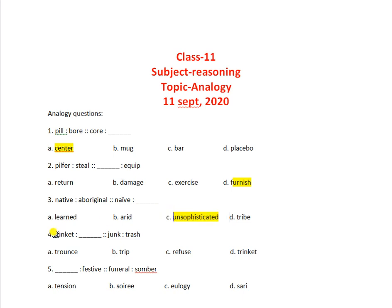Question 4: junket, blank, junk, trash. Junket is a synonym for trip, and junk is a synonym for trash. So the answer is B, that is trip.